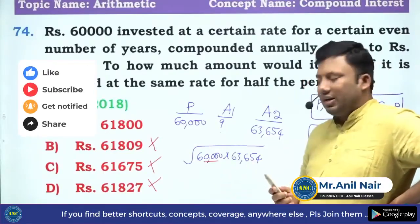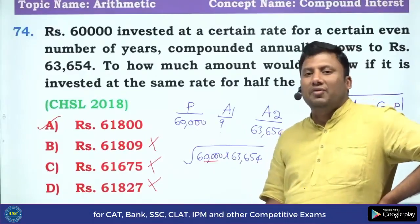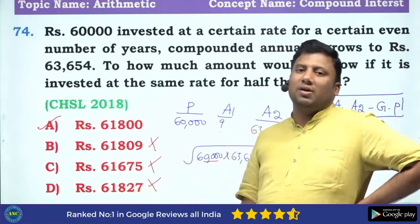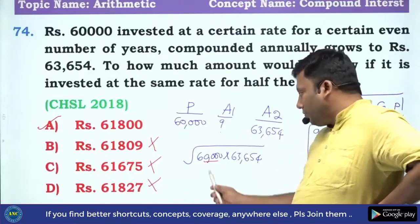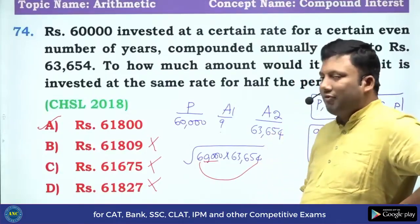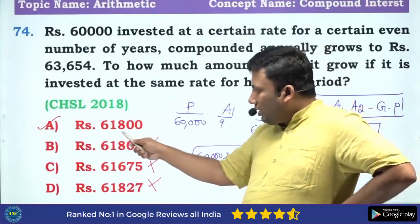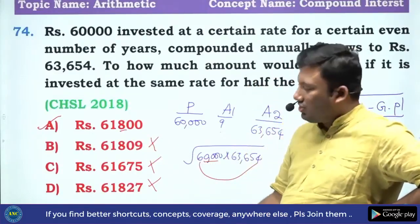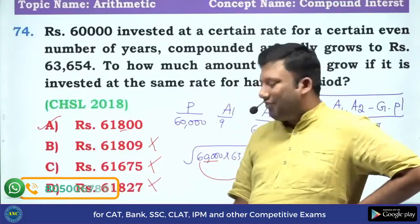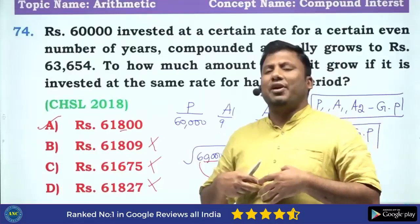Another way to look at it: 63,654 is an even number, and the square root of an even number should be an even number. Also, consider the last non-zero digits: 6 × 4 = 24, so under the square root we get a number ending in 4. Squaring the options, 8² = 64 — the rightmost non-zero digit is 4, so this will be the answer. 9² = 81, 5² = 25, 7² = 49 — none of those end in 4, so they cannot be the answer. You can look at the question from multiple angles.